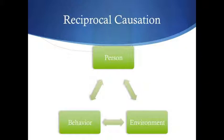If we compare this to behaviorism, the person piece would not be in there — it's just the environment influencing behavior, or behavior influencing the environment. It doesn't include the person piece. So, we can learn from social cognitive theory that a person has a choice in how they behave, but their environment also influences how they behave — it influences who they are as a person. And a person can influence their environment.